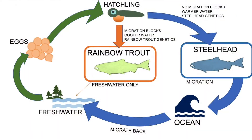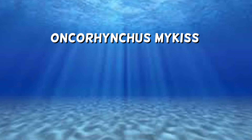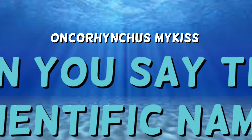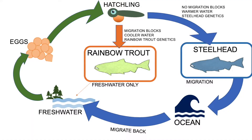Let's talk about the similarities and differences between steelhead and rainbow trout. I find it most helpful to look at the species Oncorhynchus mykiss from the perspective of their life history cycle, because you can truly appreciate how rainbow trout and steelhead, though they look and act very differently, are actually different ecotypes of the same species of fish.